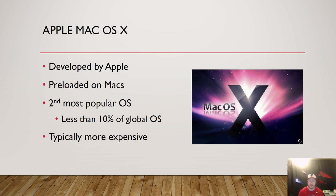Mac OS X is developed by Apple and it's pre-loaded onto Macs or MacBooks, which are their laptop version. This is the second most popular operating system in the world. If Windows is taking up 80% of the market and Mac is taking up 10%, that's obviously a big difference between the first and second largest desktop operating systems. The reason for this is Macs are typically more expensive than your PCs or Windows computers.